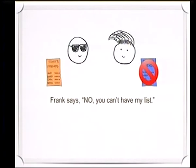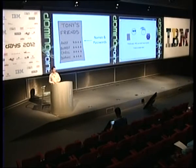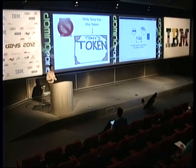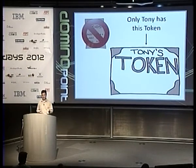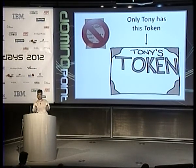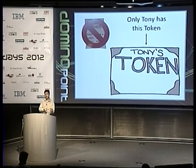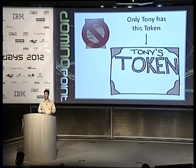So Frank had a better idea. They're going to have something called a token — you can think of a token as a ticket, a piece of paper — something that Tony can give to his people and have them bring it over to Frank. Frank says, yes, this is Tony's token, I know who this person is, I will sign the token and bring it back. Then Tony knows Frank's signature, and when they bring back the token, he says, oh, you know Frank? Okay, you can come into my disco.